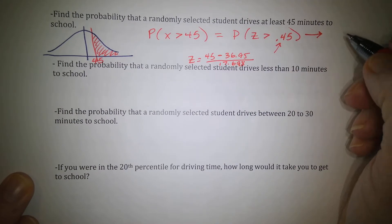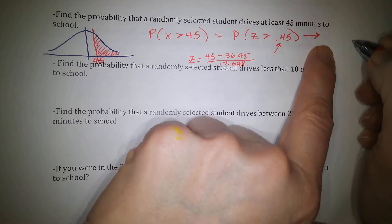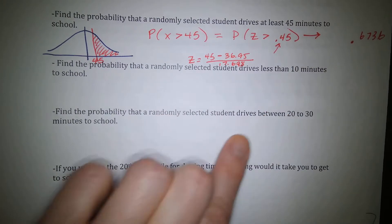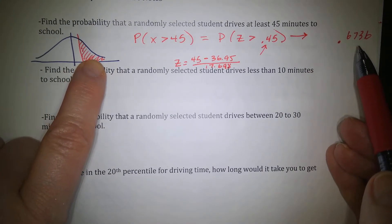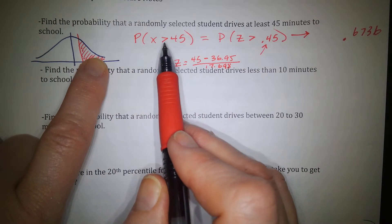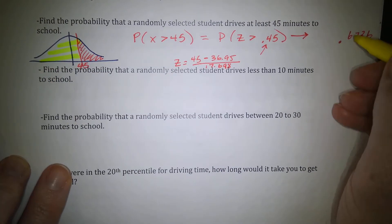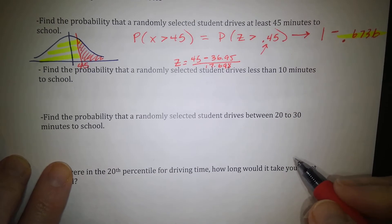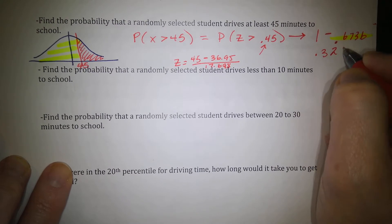When I look up z = 0.45 in the table, I get 0.6736. But since I'm looking for the right side of the graph, I need to subtract the left side from 1. This number 0.6736 is the left side of the graph. So to find the right side: 1 − 0.6736 = 0.3264. My probability is 0.3264.